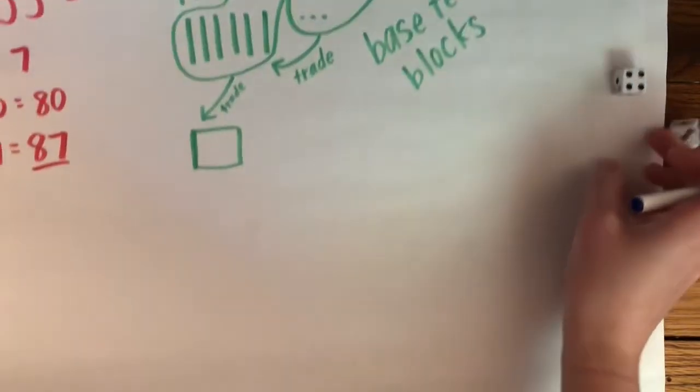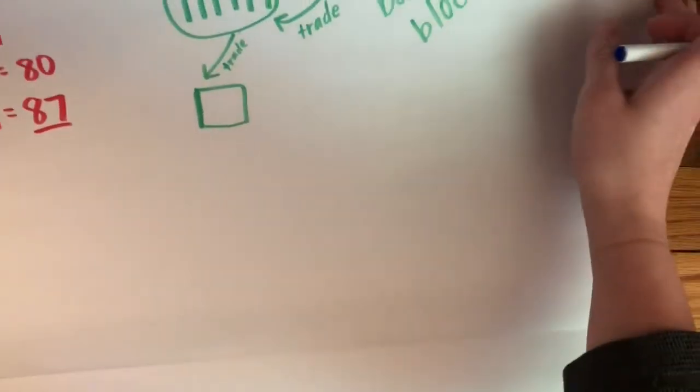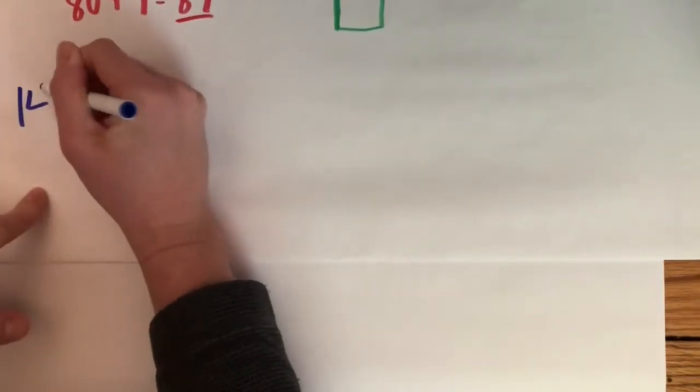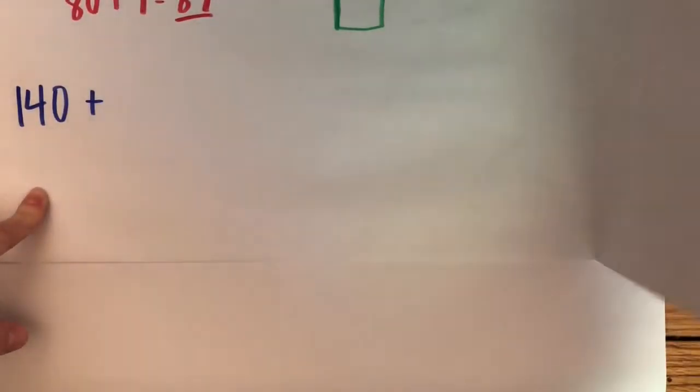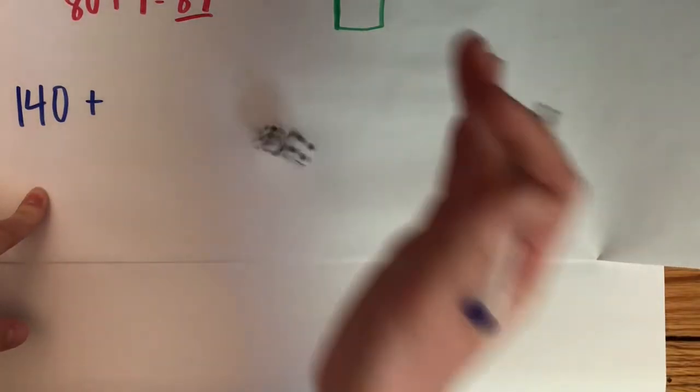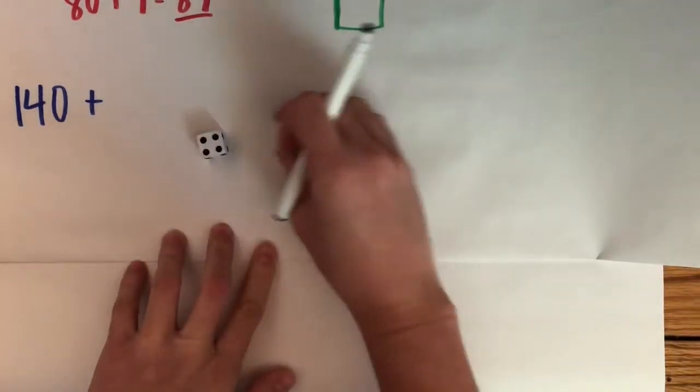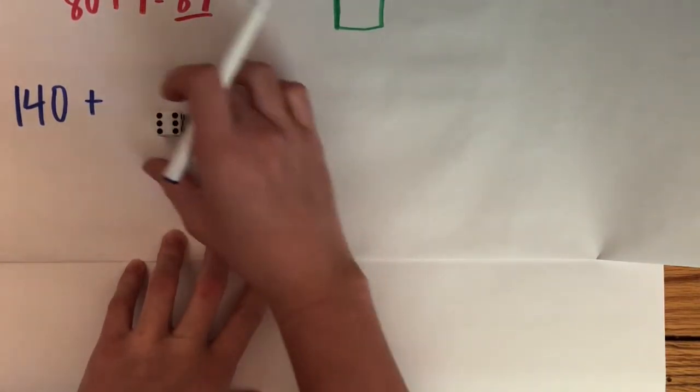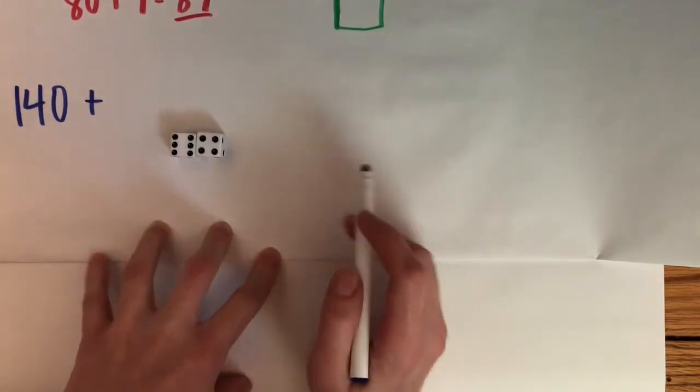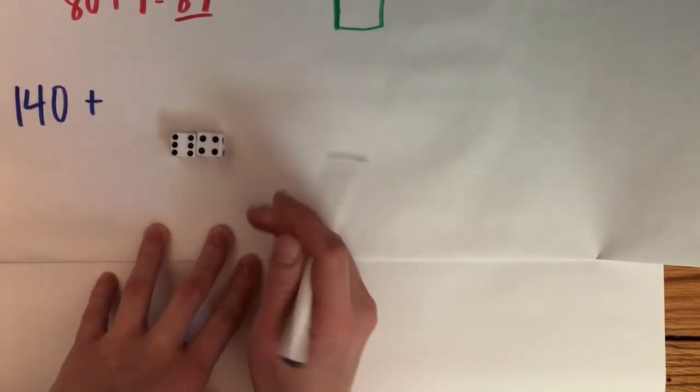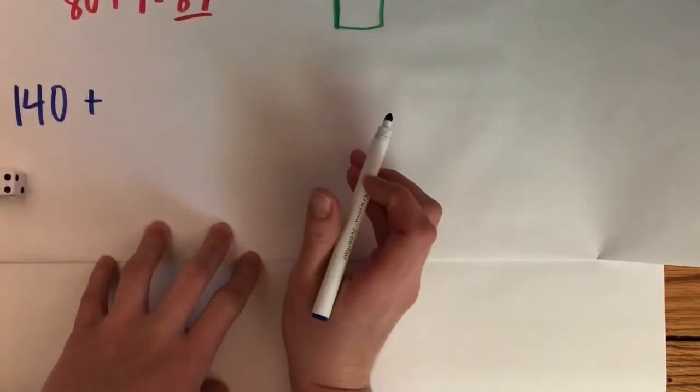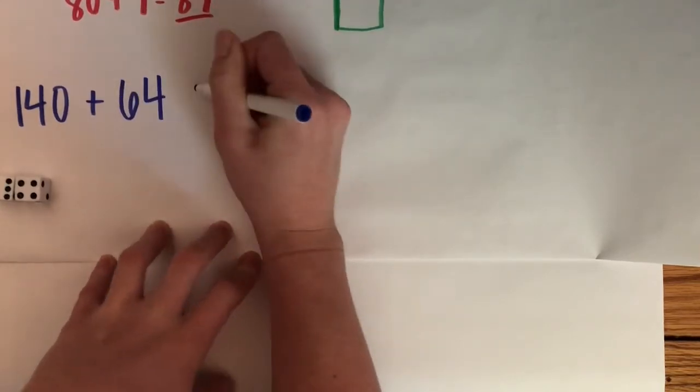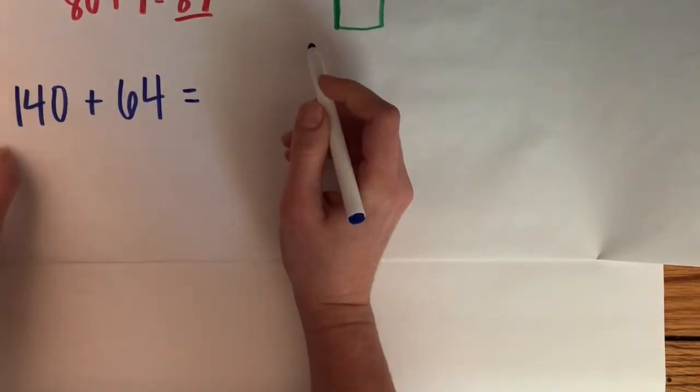So I'm going to start with that number in my next equation. I'm going to have 140 plus my dice. We're going to roll our dice. So I have a 4 and a 6. So I know I can make the numbers 46 or I can make the number 64. And in my head I know that 64 is greater than 46. So in order to get to 1000 first, I'm going to use 64. So I have 140 + 64 equals my answer.